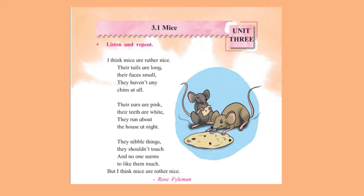Now children, we have learned so much about the mouse. We are going to learn a poem today on mice. 3.1 — Mice, by Rose Fyleman. I will read the poem to you children, listen carefully: 'I think mice are rather nice. Their tails are long, their faces small. They haven't any chins at all. Their ears are pink, their teeth are white. They run about the house at night. They nibble things they shouldn't touch. And no one seems to like them much. But I think mice are rather nice.'